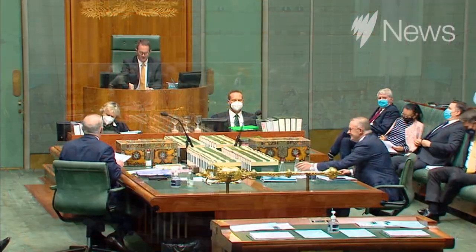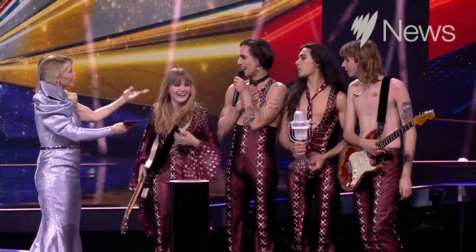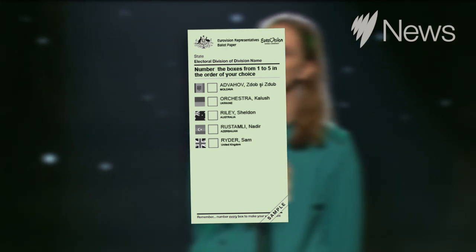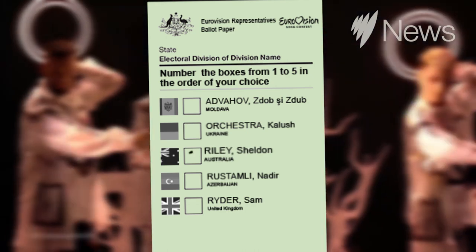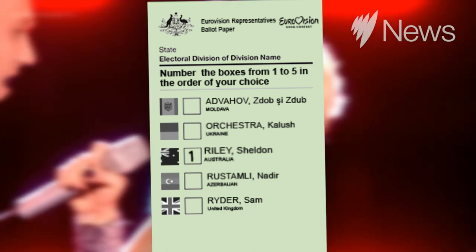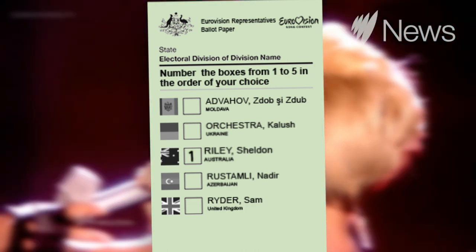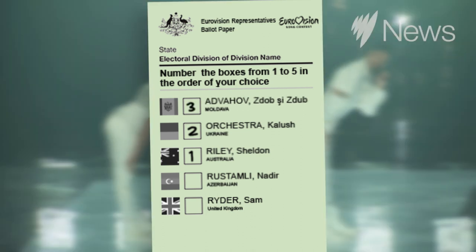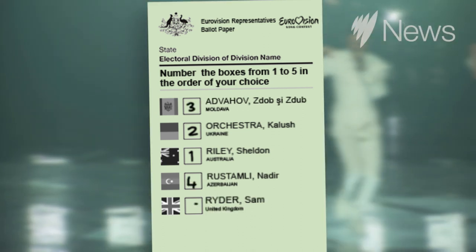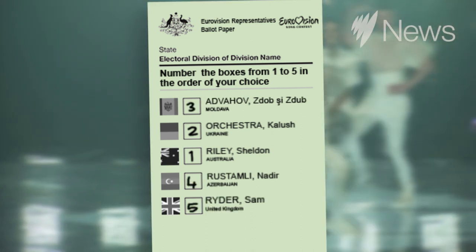Much like we're deciding who will be the winner of Eurovision. You'll number the candidates in the order of who you want to represent you, from first choice to last. So I'm going to go: Australia — one, because I want them to win the most; two, Ukraine; three, Moldova; four, Azerbaijan; and five, UK, because they're the country I least want to win.